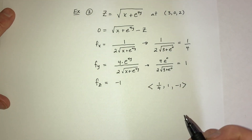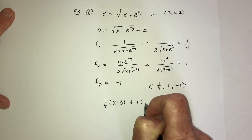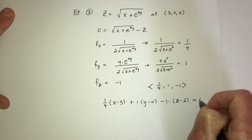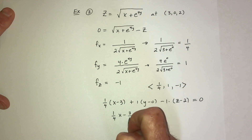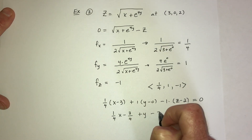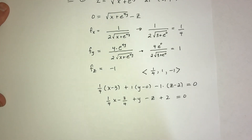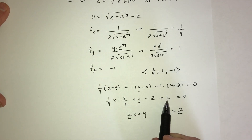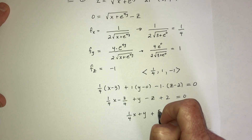The derivative with respect to y is also 1 over (2 times the square root), with chain rule giving 4e^(4y). Plugging in (3, 0): 4e⁰ over (2 times √4) = 4/4 = 1. So Fᵧ = 1. The derivative with respect to z is −1. The gradient vector is (1/4, 1, −1), and the tangent plane is (1/4)(x − 3) + 1(y − 0) − 1(z − 2) = 0, which gives z = (1/4)x + y + 5/4.